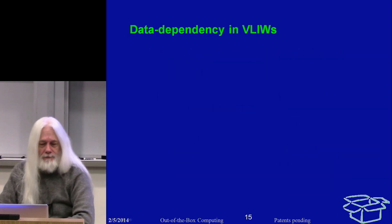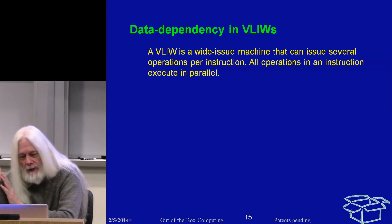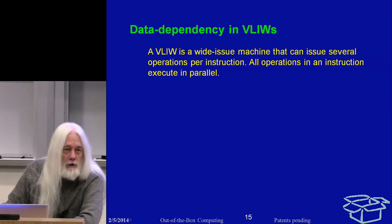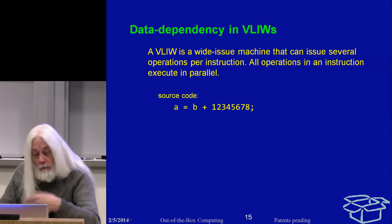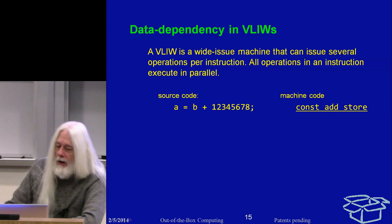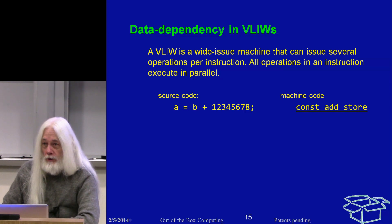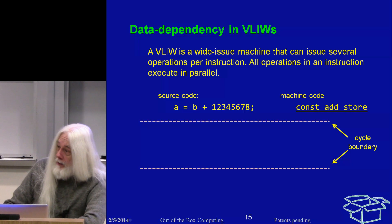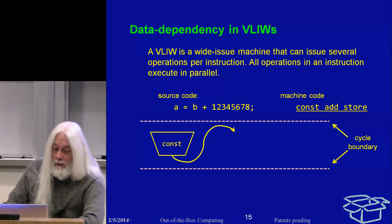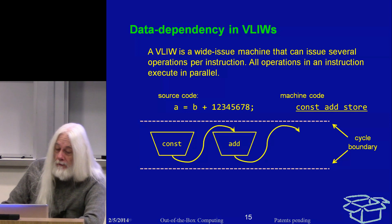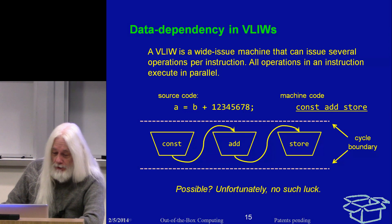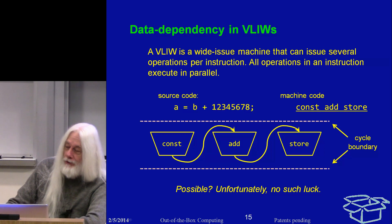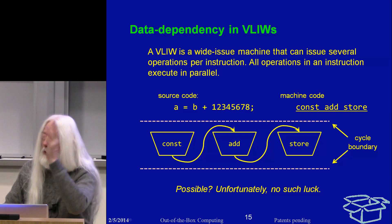In a VLIW, which is a wide-issue machine, you can issue several operations in parallel — const, add, and store all in one instruction. But unfortunately you can't actually do that. The whole cycle is taken up by the const, and the whole cycle is taken up by the add, and arrows don't go upwards in data flow — they only go downwards. Anytime you see an arrow going upward, that means it is physically impossible. So those paths are impossible.